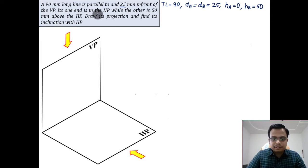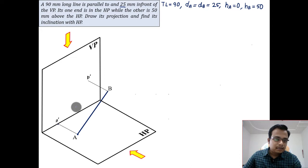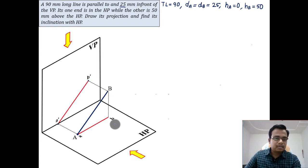Let me show you the pictorial representation - this is how the object has been kept, rather the line has been kept. Now this end A is actually in contact with the HP, it's already in contact. If you try to have the front view of it, its front view is going to lie on this XY line - that's going to be A dash and that's B dash. It's that simple.